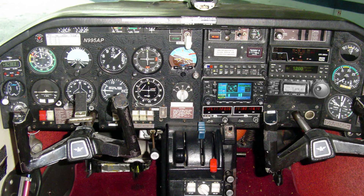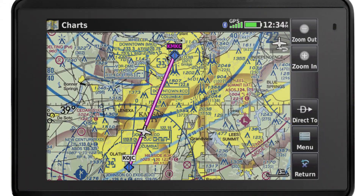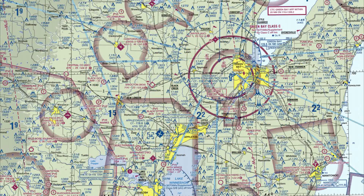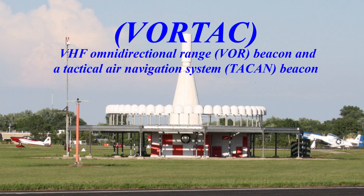We even have GPSs that are specially designed for aircraft use. They contain charts and navigational aids to help us get where we want to go. One of the most common navigational aids is the VORTAC, which stands for VHF omnidirectional range beacon and a tactical air navigation system beacon.